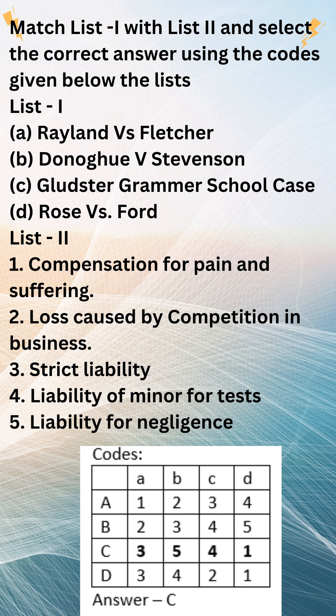The deceased's estate claimed damages under two heads: (1) under the Fatal Accidents Acts 1884–1934 as a partial dependent of the deceased; and (2) under the Law Reform (Miscellaneous Provisions) Act 1934 for the benefit of the deceased's estate in respect of pain and suffering, loss of the leg, and shortening of reasonable expectation of life. The trial judge awarded damages under all three heads. However, the Court of Appeal reversed the award for damages for loss of the leg on the grounds that the deceased had only lost her leg for two days before her death. The House of Lords upheld the decision of the Court of Appeal.